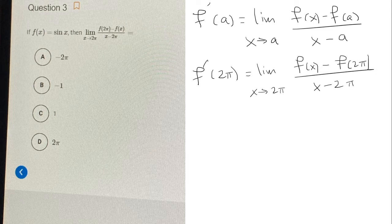So in the numerator, instead of having f of x minus f of 2 pi, we have f of 2 pi minus f of x. So the order is reversed. Now, because the order is reversed, we know that the difference between them is a factor of negative 1.